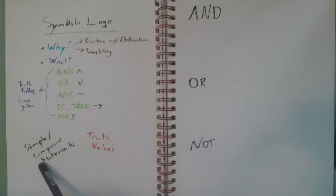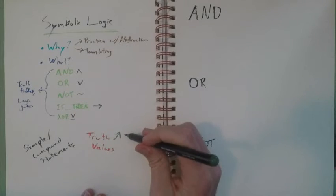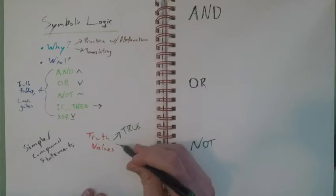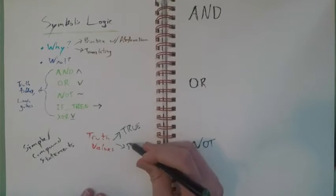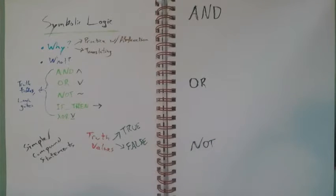We're going to be dealing with simple and compound statements that have some truth value. Now what that means is that a statement is either true or false. So not all statements in English follow this. We might have questions of taste, we might have a command, or we might have a contradiction. And we'll talk about some of those later on.